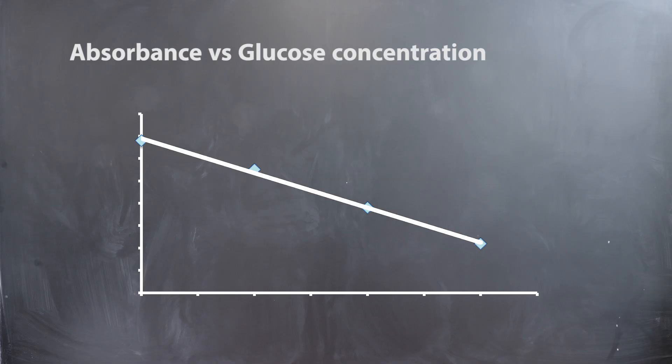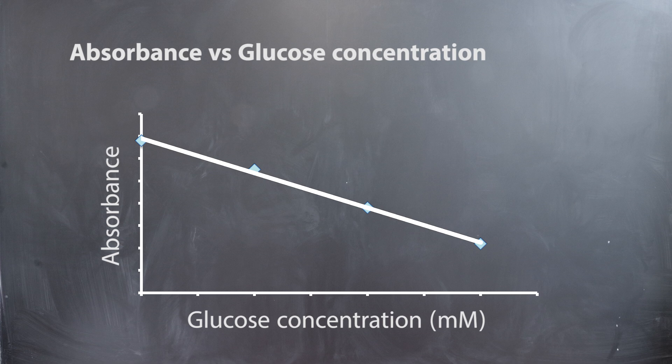From the data obtained from flasks 1 to 4, construct a standard curve of absorbance on the y-axis versus concentration of glucose on the x-axis. This is just a sample graph. Your graph may have a positive slope.